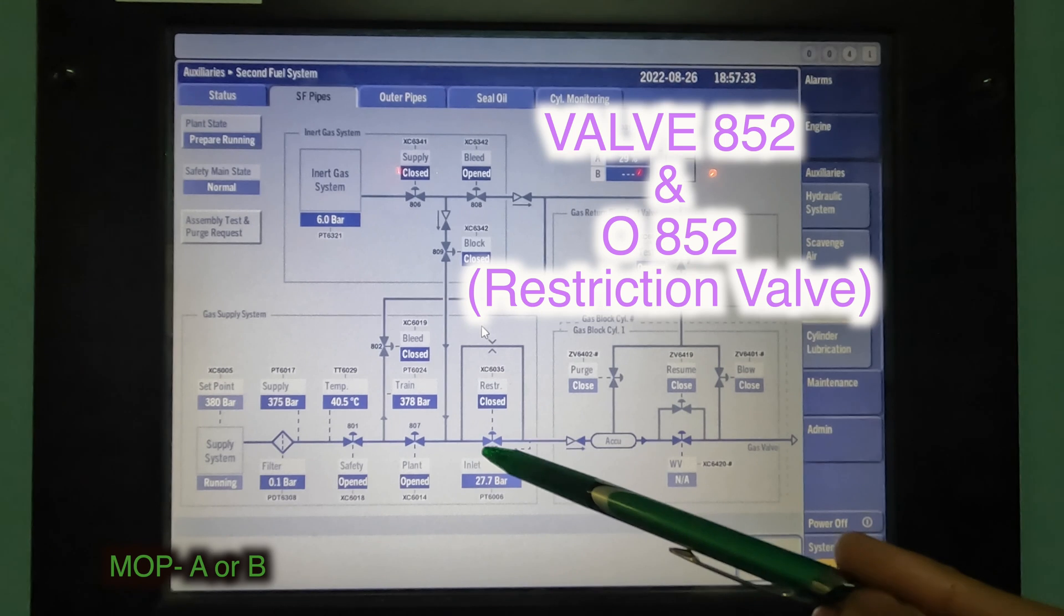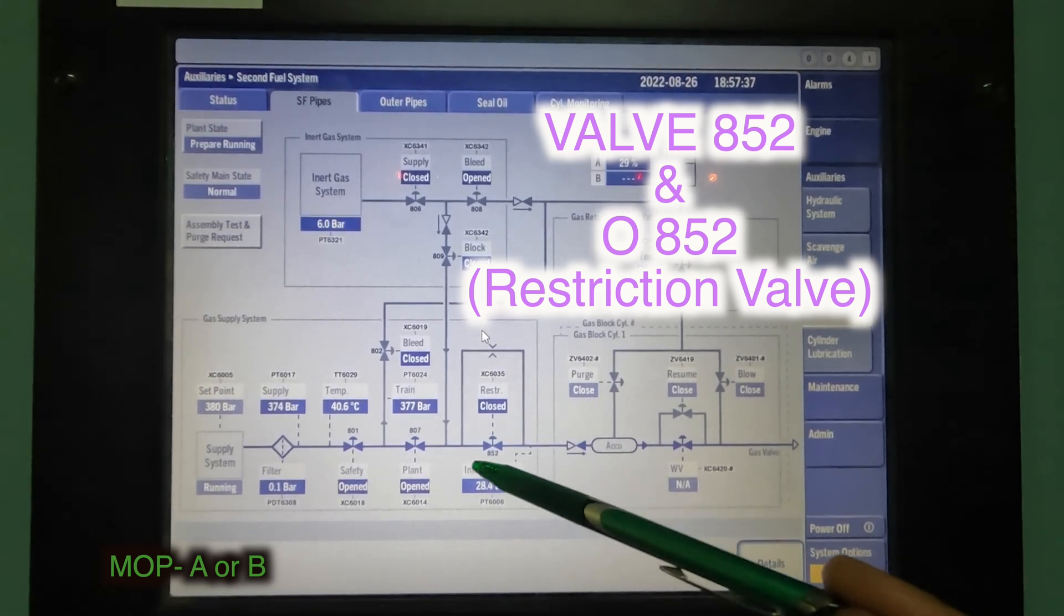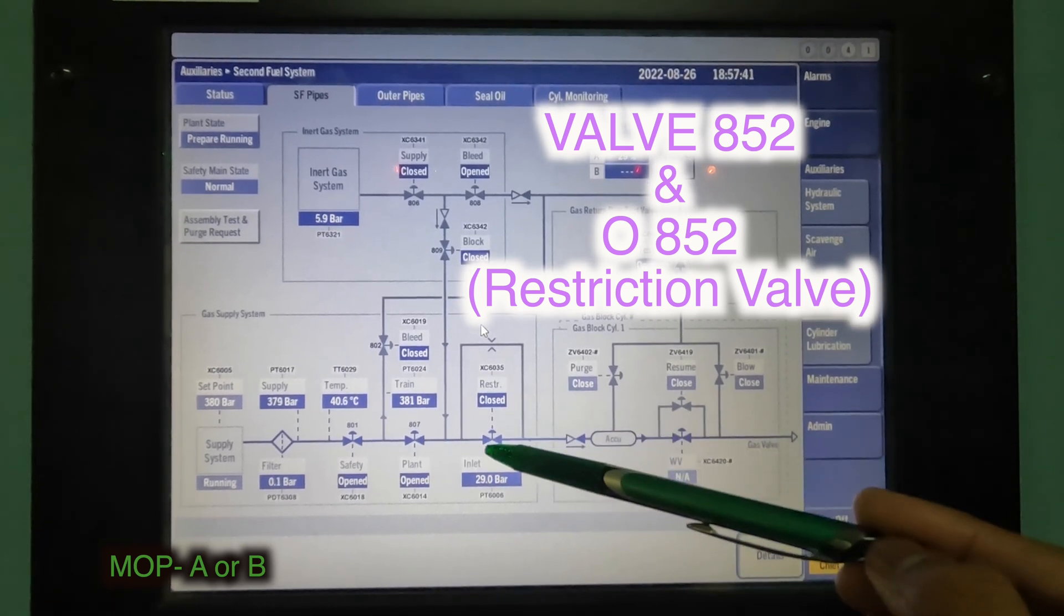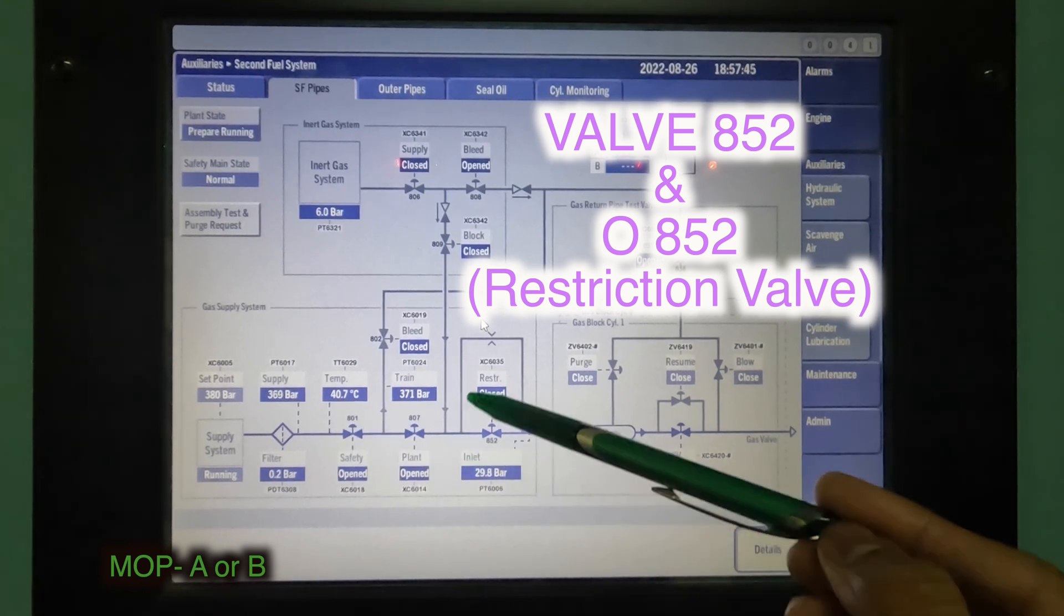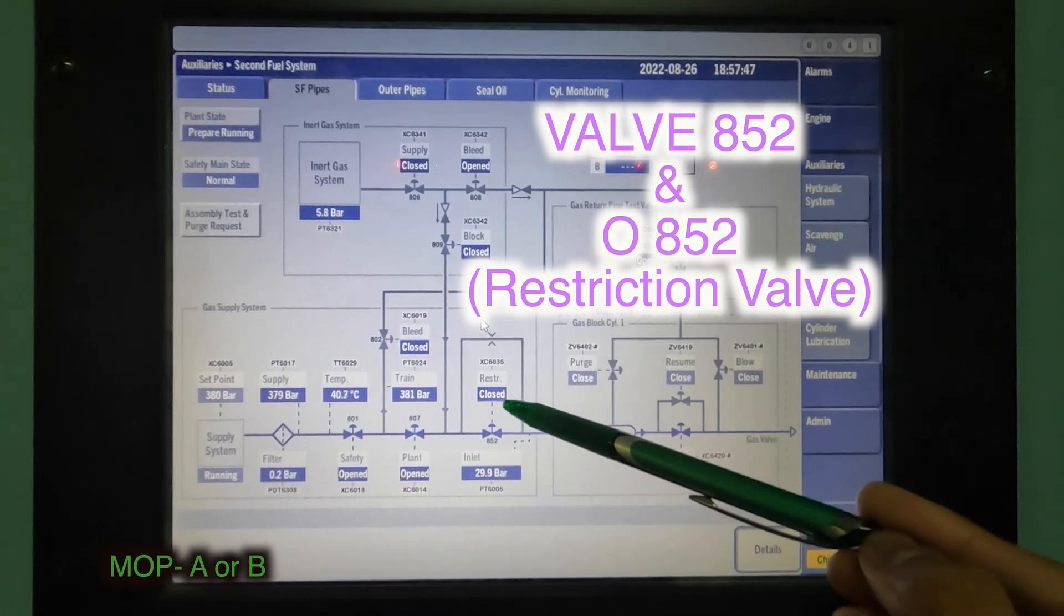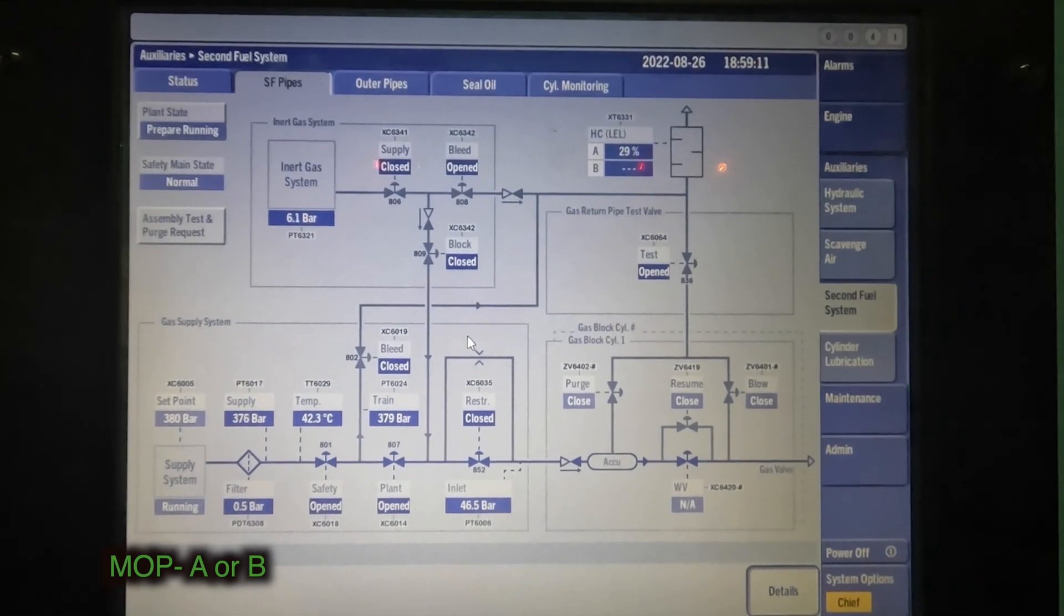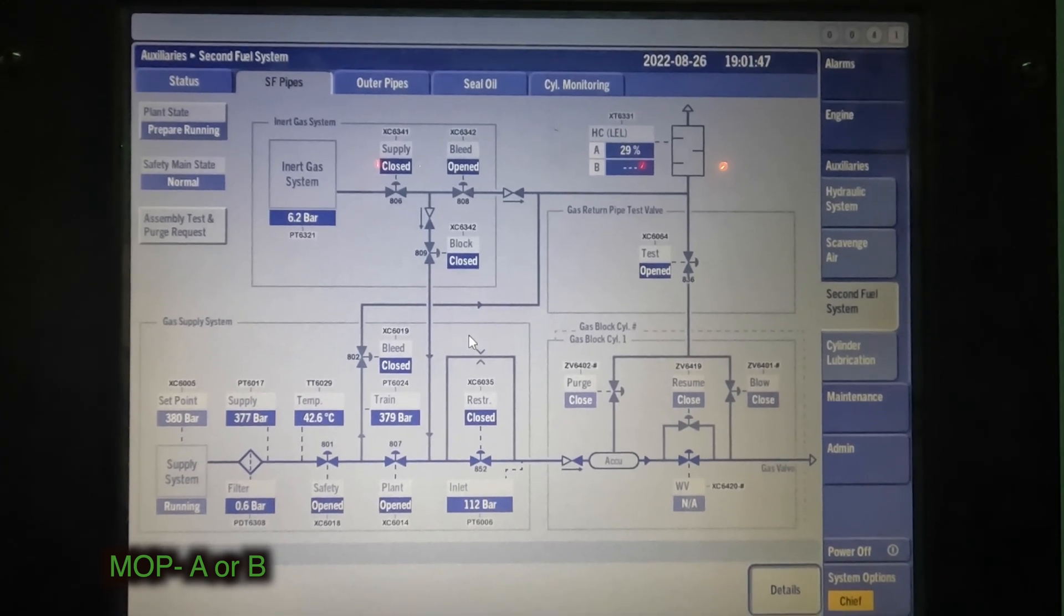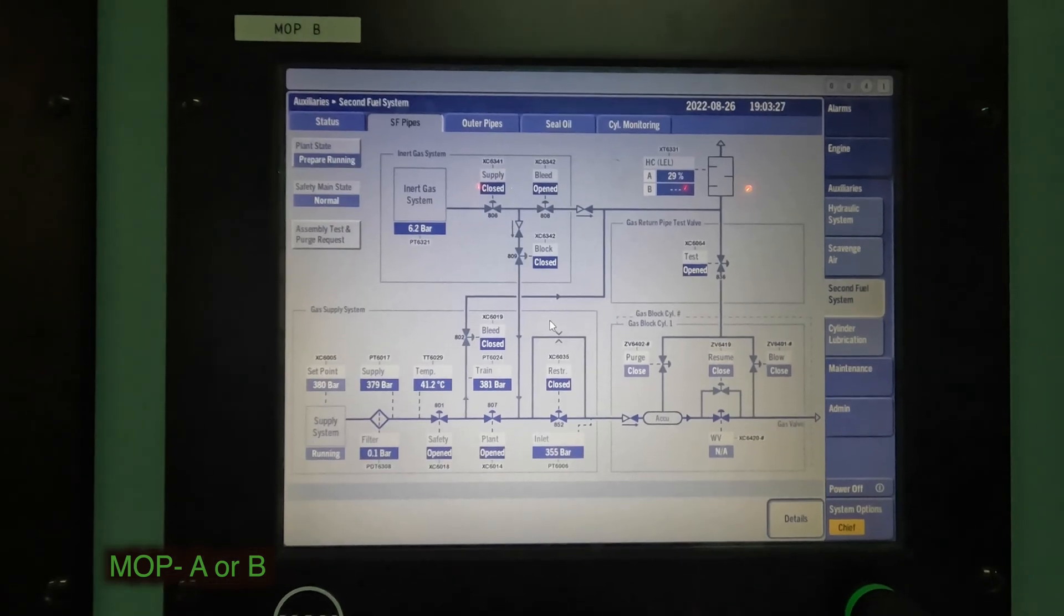This happens because we don't want, once this valve opens, we just don't want 380 bar to come here and shoot on this side. This will cause a high pulsation, high pulse with 380 bar and a sudden drop on this side. And hence, we have a restriction valve on that side. Okay, so time to speed up again. We see the pressure building up right up to 380 bar from the orifice valve and once it's 380 bar, you'll get a moving signal on 852 and that's when the engine is ready to fire.